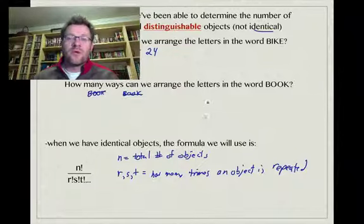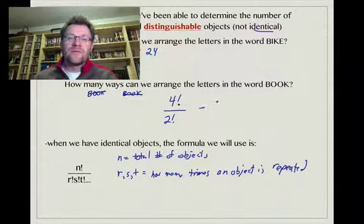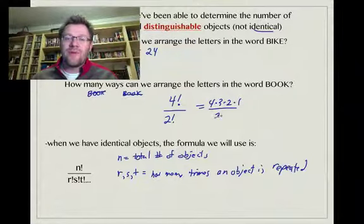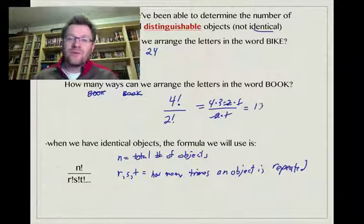If we're talking about the word BOOK here, we start off with 4 factorial, then we divide by 2 factorial because we have two O's. So instead of being 4 times 3 times 2 times 1, it's 4 times 3 times 2 times 1 divided by 2 times 1. Those things cancel out, you're left with 12. And so when we have identical objects, we need to use this formula.